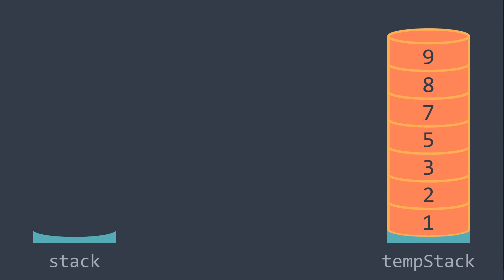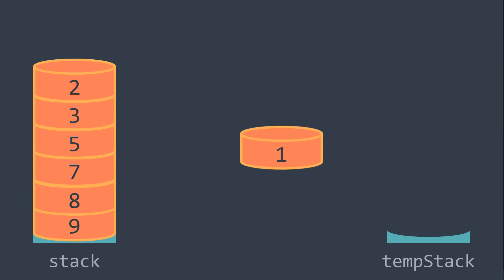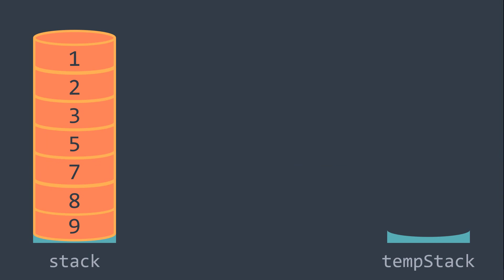Now we have no more elements in stack, which means we got our stack sorted in descending order in the temporary stack. But the final result must be in stack — the temporary stack is here just to help. So let's push all the elements into stack again: 9, then 8, then 7, then 5, then 3, then 2, and then 1. As you can see, we got them in ascending order in stack — the smallest value is at the top, which is exactly what we want. It's because when you push all elements of a stack into another one, they get reversed.